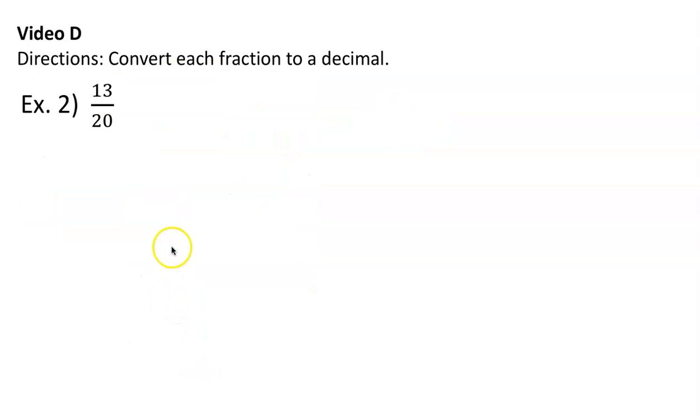All right, let's take a look at example 2, 13 20th. We're going to convert this fraction to a decimal. Let's change the pen color. Use blue this time. The denominator, you just carry across. And then the numerator, you're going to put on the inside. So the 13 is being divided by the 20. And 20 goes into 13 0 times. And then I'm going to add a decimal here and a decimal here. And I'll add a 0 here.